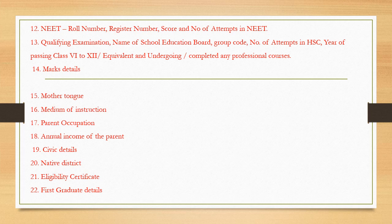Additional details required include: mother tongue, medium of instruction, parent occupation, annual income of the parent, civic details, native district, eligibility certificate, and first graduate details.